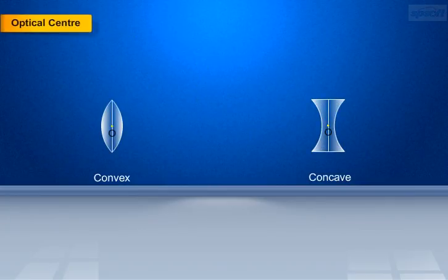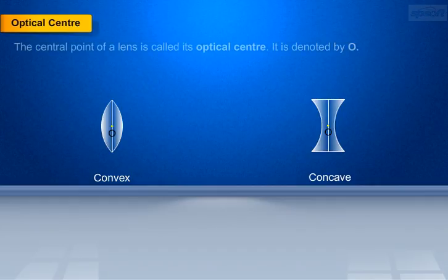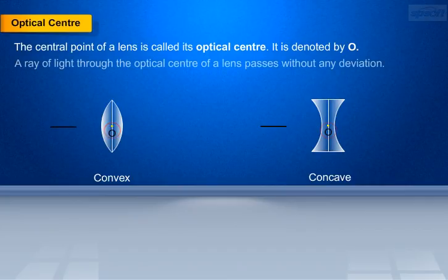Optical center of the lens. The central point of a lens is called the optical center of the lens. It is denoted by the letter O. A ray of light through the optical center of a lens passes without any deviation.